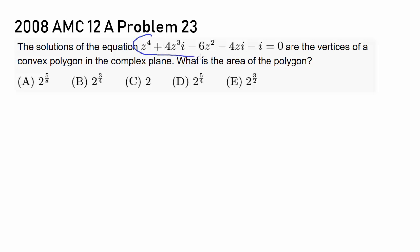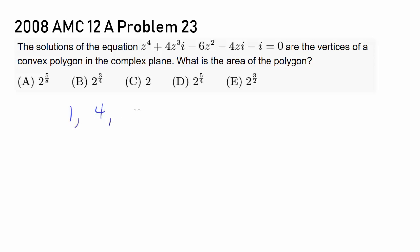The first thing that jumps out is that we have the coefficients 1, 4, negative 6, negative 4, negative 1. And I recognize 1, 4, 6, 4, 1 as one of the rows of Pascal's triangle.